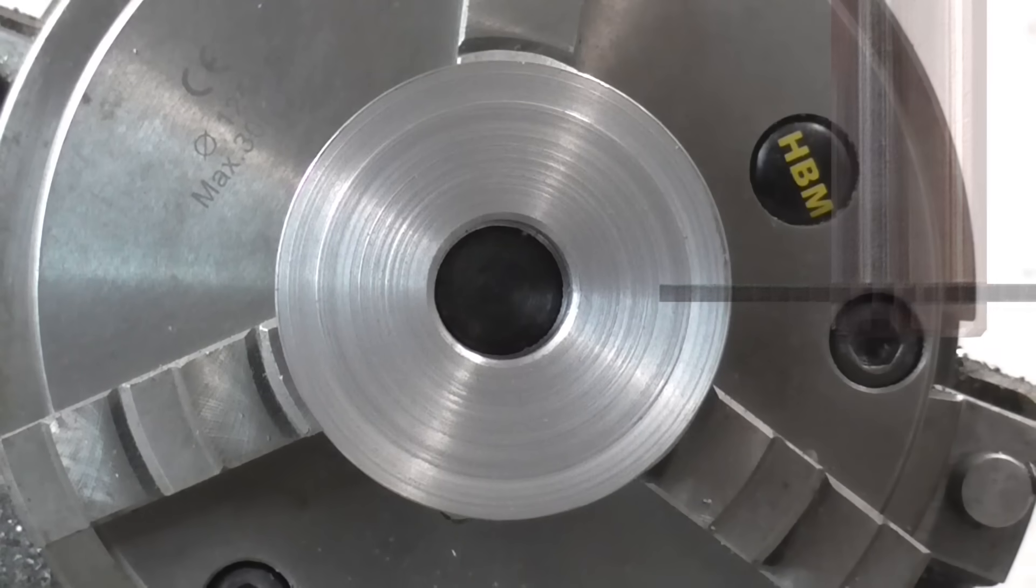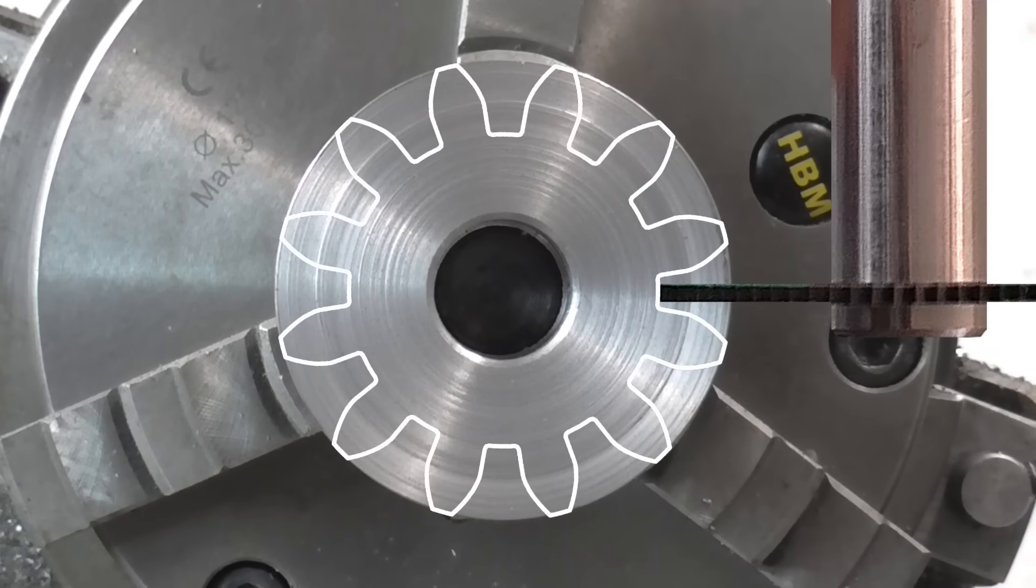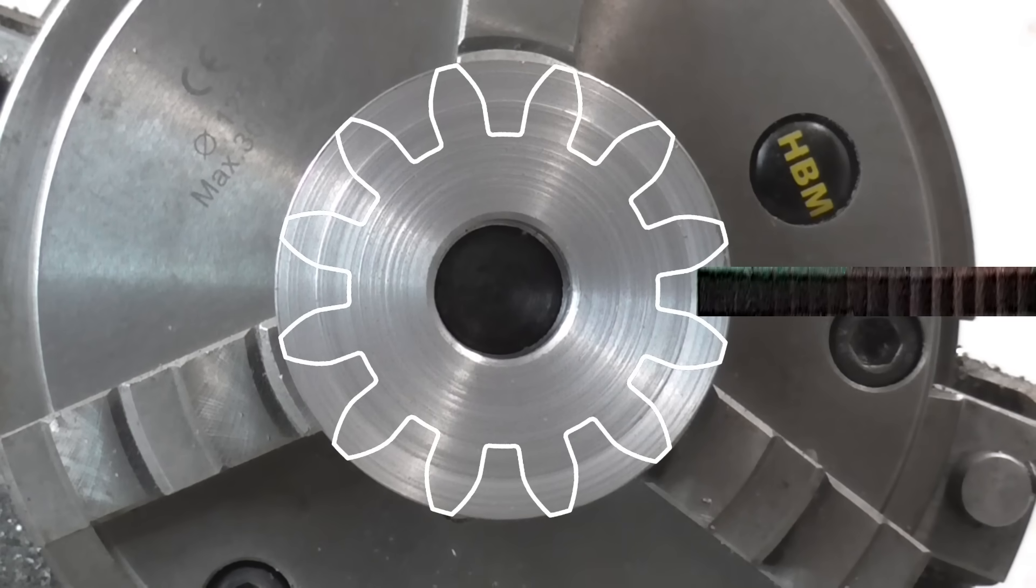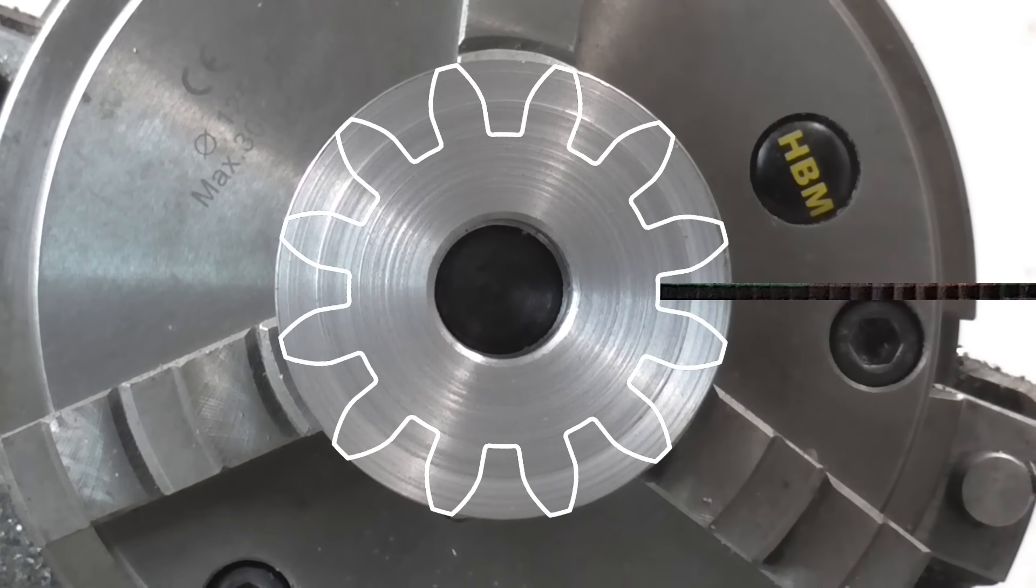I've chosen a 2mm slitting saw to cut this with. The thinner the blade, the quicker it will cut, as less metal needs to be removed. But if it's too thin, it can flex and the cuts may be off. If it's too thick, it won't reach into the root of the tooth. A thickness of around half the module size works well.